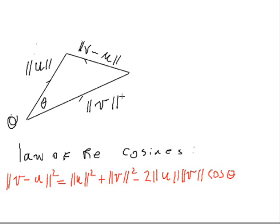All right. So now we recall the law of the cosines, and what the law of the cosines says is that the length opposite theta, v minus u, the norm of this squared, is equal to the norm of u squared plus the norm of v squared, minus 2 times the norm of u times the norm of v times cosine theta.